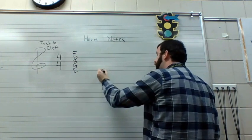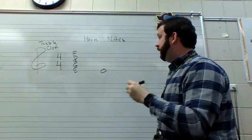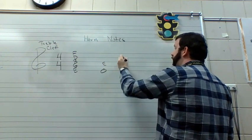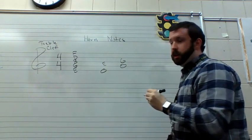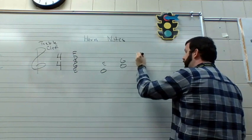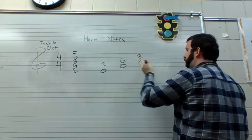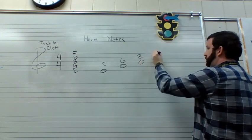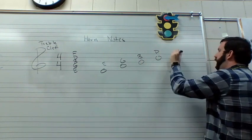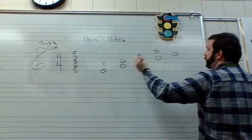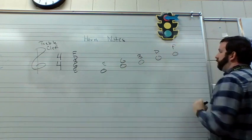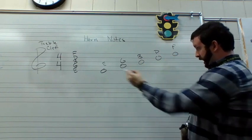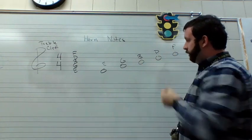If I have a note on the first line, that note is E for every. If I have a note on the second line that's G for good. The third line is B for burgers, every good burger. The fourth line is every good burger deserves, and the fifth line is every good burger deserves fries. E-G-B-D-F.